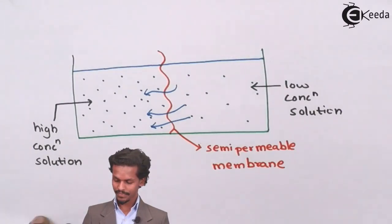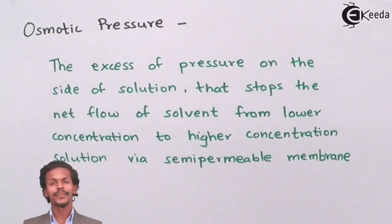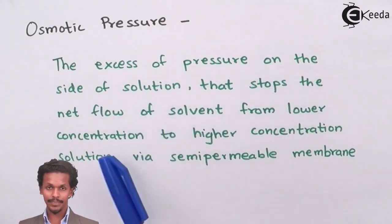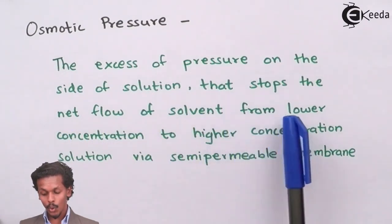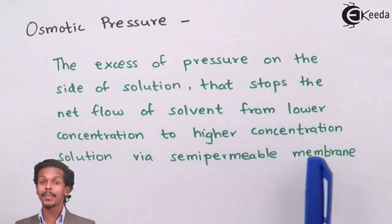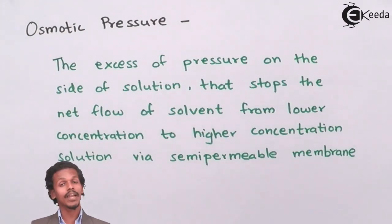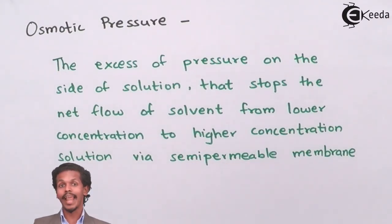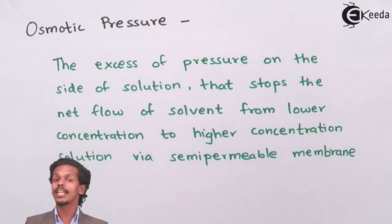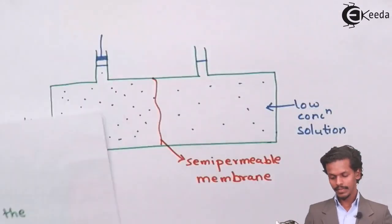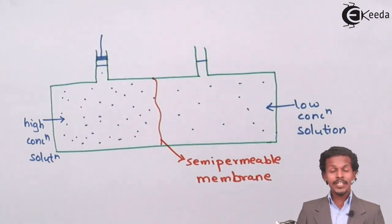Now let us study what osmotic pressure is. Osmotic pressure means the excess pressure applied on the side of the solution that stops the net flow of solvent from low concentration to high concentration solution through a semi-permeable membrane. In other words, it is the pressure we apply so that osmosis is prevented, stopping the solvent flow from lower to higher concentration.